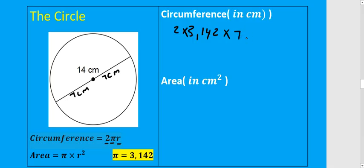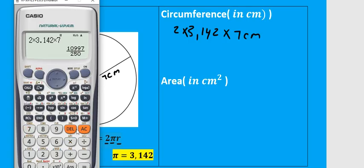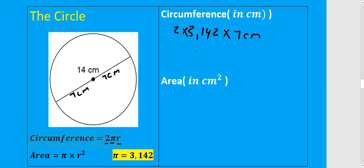Multiply by 7 centimeters on your calculator: 2 × 3.142 × 7, and this gives you a circumference of 43.988 centimeters.